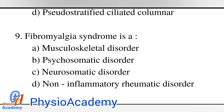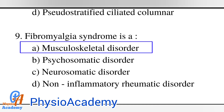Question number nine: fibromyalgia syndrome is option A: a musculoskeletal disorder, option B: a psychosomatic disorder, option C: a neurosomatic disorder, option D: a non-inflammatory rheumatoid disorder. The correct answer is option A: musculoskeletal disorder.